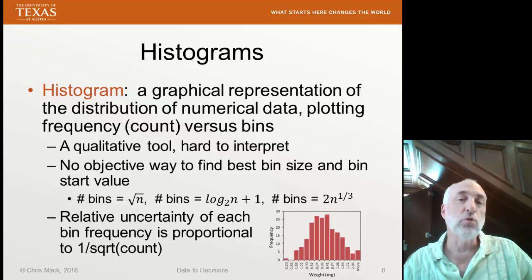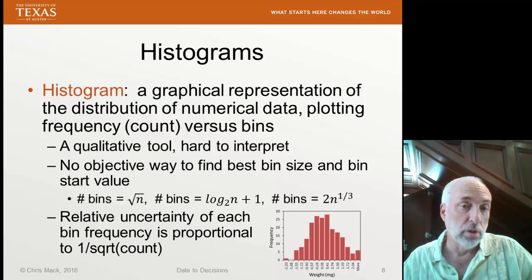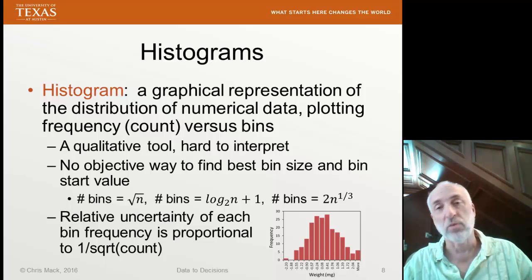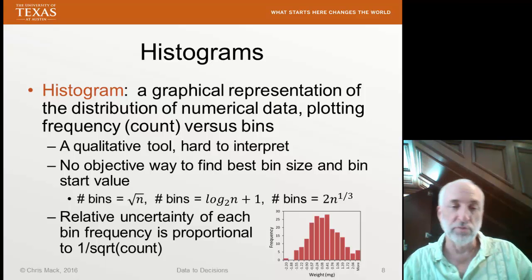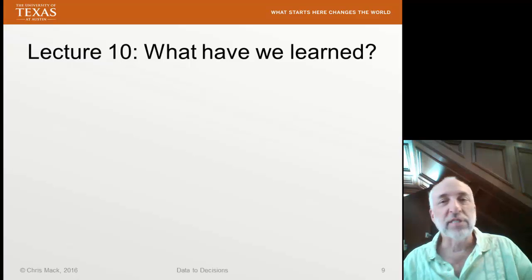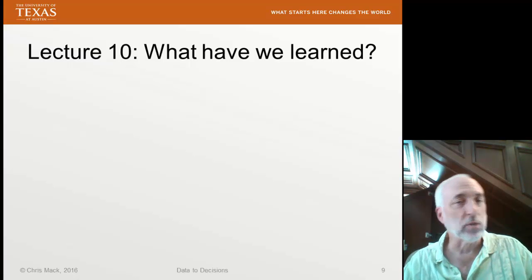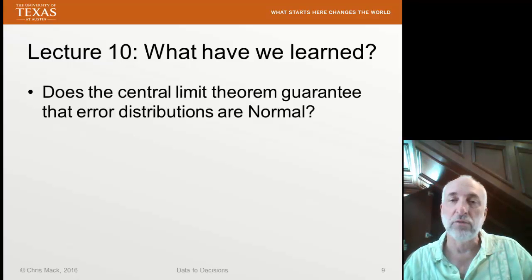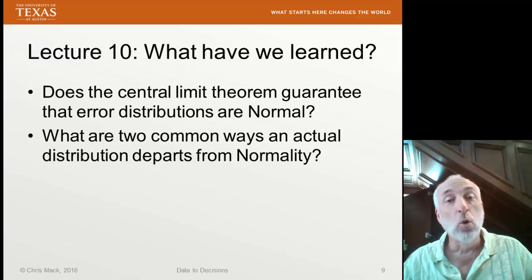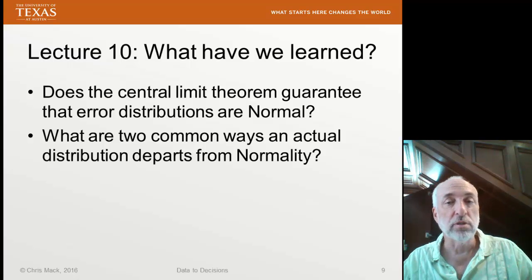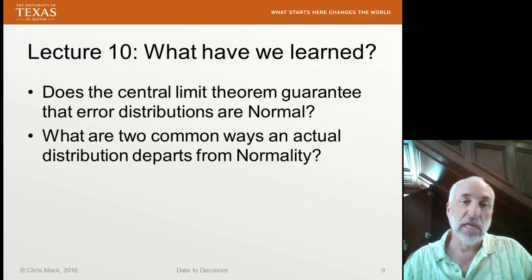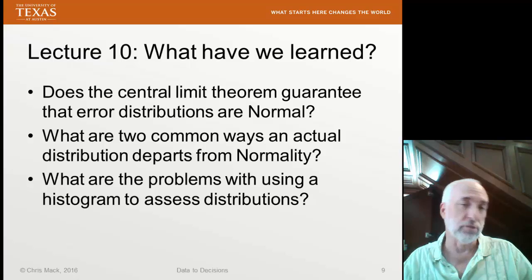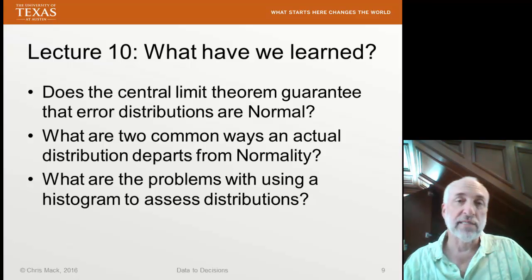Instead, in the next lecture we will look at QQ plots, which I think is a very powerful and underutilized tool for comparing a particular distribution to an assumption — for example, comparing a set of data to a normal distribution. In this lecture, you should be able to answer: Does the central limit theorem guarantee that error distributions will be normal? What are two common ways an actual distribution departs from normality? And what are the problems with using a histogram to assess the shape of a probability distribution function? That's Lecture 10 — until next time.